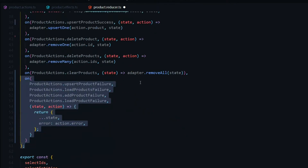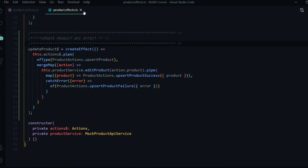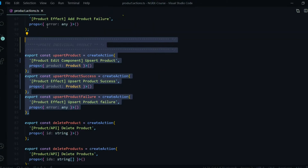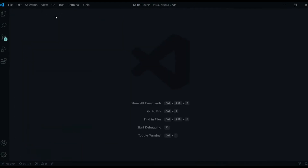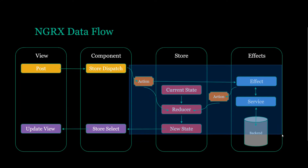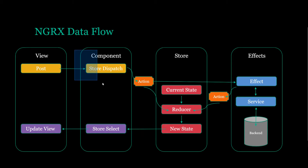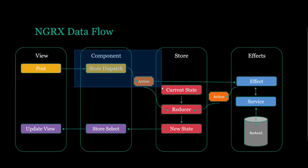Now that we've set up all of our actions, reducers, and effects, we're ready to start dispatching our first action. We assembled all of our pieces — created our effect, our action, and updated the store. Now we're ready to dispatch an action. We'll open up the edit component and dispatch our first action from there.